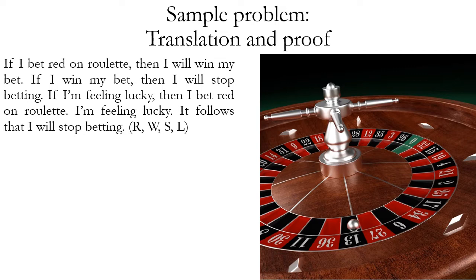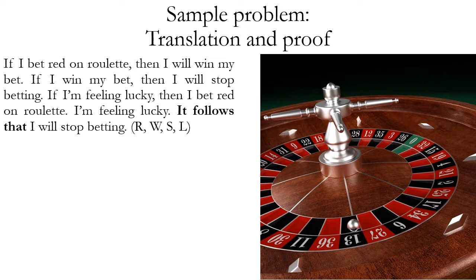The argument reads: If I bet red on roulette, then I will win my bet. If I win my bet, then I will stop betting. If I'm feeling lucky, then I bet red on roulette. I am feeling lucky. It follows that I will stop betting. The phrase 'it follows that' is a conclusion indicator, so the proposition that follows it is the conclusion. On these problems, the conclusion is always placed last.